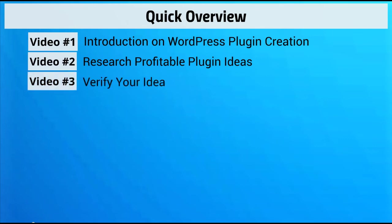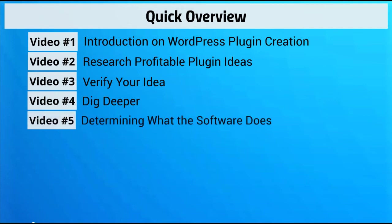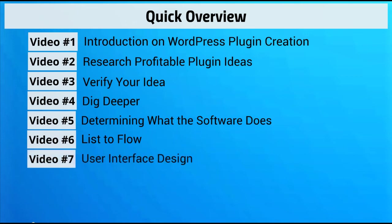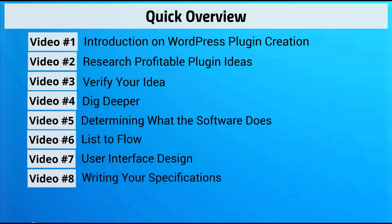Video number three is verifying your idea — we're going to make sure that it is indeed profitable. Video number four, we're going to talk about digging deeper; we want to analyze the situation so that we do our due diligence. Video number five is determining what the software does, which is a crucial part — this is pretty much a make-it-or-break-it because it's the reason why somebody is going to buy your plugin. Video number six is list to flow — we take the list created in the previous video and map it out by creating a flowchart. Video number seven is the user interface. Video number eight is writing your specifications, which is basically the whole goal of this video course.